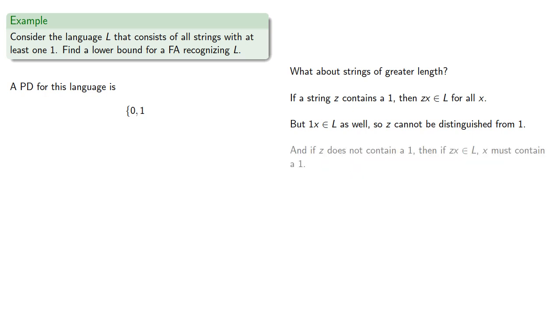And if z doesn't contain a 1, then if zx is in L, x must contain a 1. So 0x will also be in L, so z can't be distinguished from 0. And that means no other string can be in our pairwise distinguishable set.